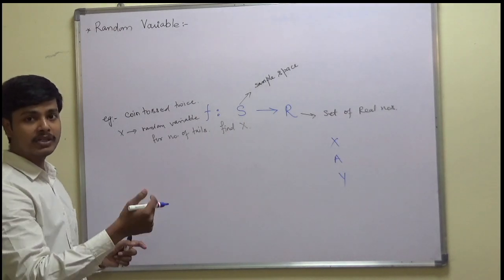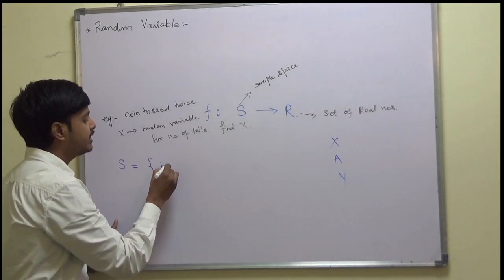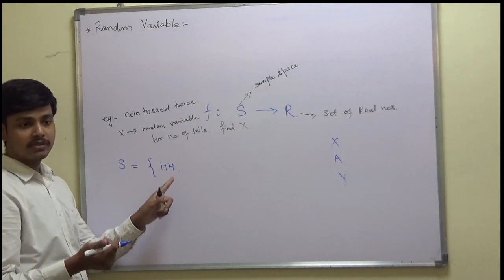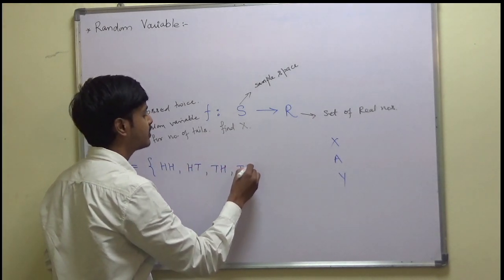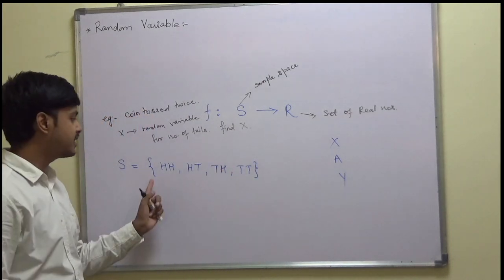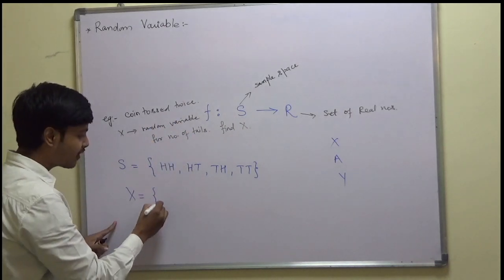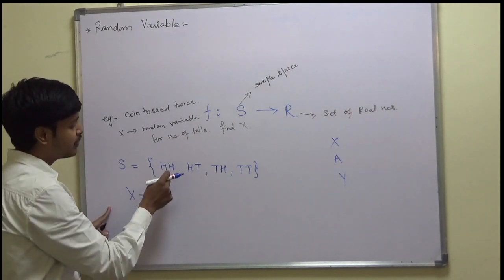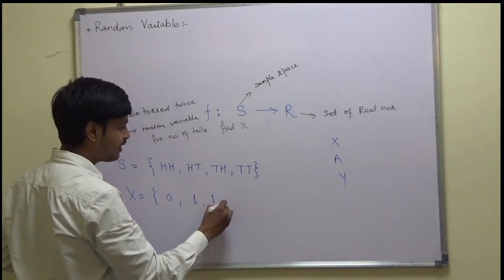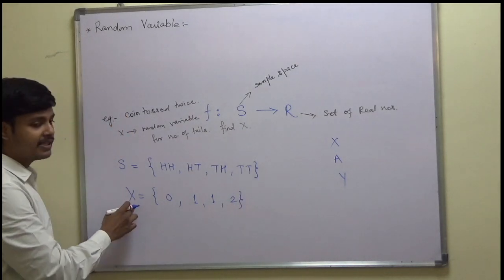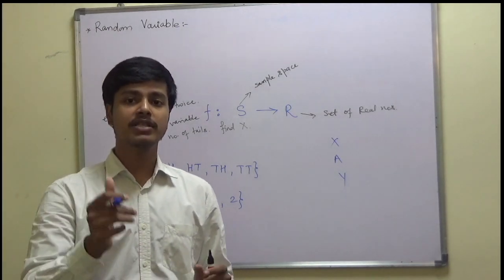If a coin is tossed two times, what is the sample space? The outcomes are: both heads (HH), one head one tail (HT), one tail one head (TH), and both tails (TT). Now X is the random variable for number of tails, so we assign values: HH gives 0 tails, HT gives 1, TH gives 1, and TT gives 2. So X takes values {0, 1, 2}, and this becomes the random variable for the random experiment of tossing a coin twice.